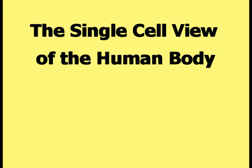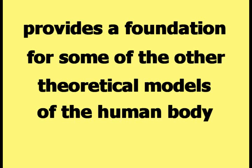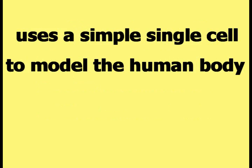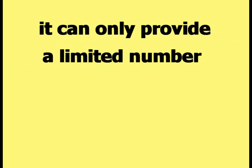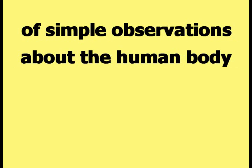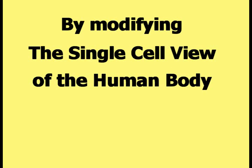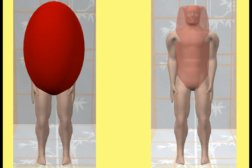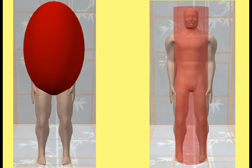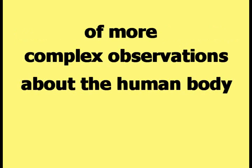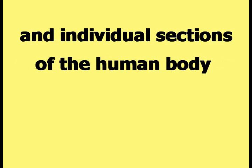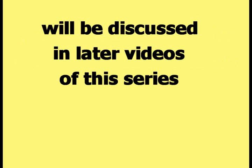The single cell view of the human body provides a foundation for some of the other theoretical models of the human body that are part of HAPI theory. Because it uses a simple single cell to model the human body, it can only provide a limited number of simple observations. By modifying the single cell view into something slightly different or more complex, such as the egg view, the torus view, or the single cylinder view of the human body, it is possible to describe a larger number of more complex observations. The insight gained by treating the entire body and individual sections as a large single cell will be discussed in later videos of this series.